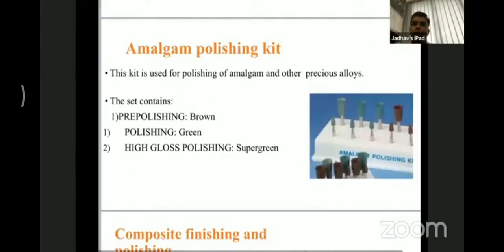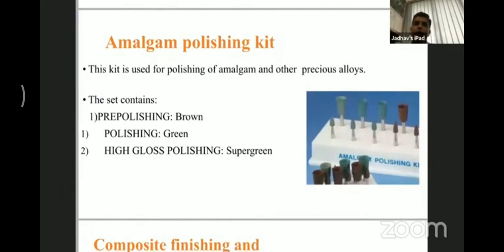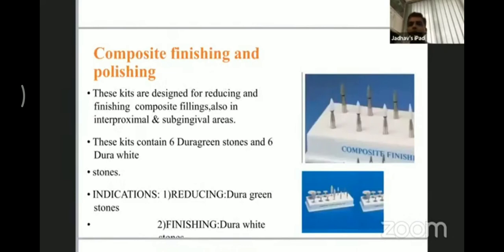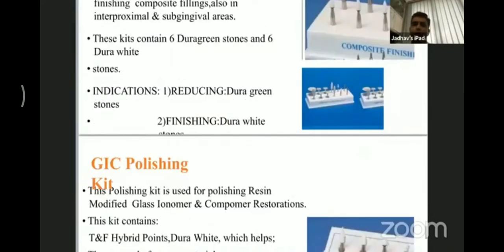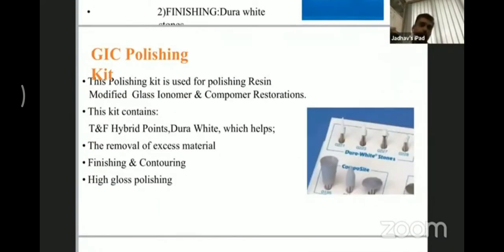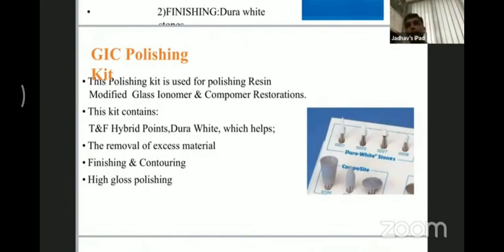For amalgam finishing, there is a kit available in brown, green, and super green. For composites, green and white are used in sequence, containing different shapes and sizes, and gross finishing can also be done with the white. For glass ionomer, a commonly asked question is: when is finishing and polishing done? Gross finishing of glass ionomer is done at the end of restoration using a sharp instrument or blade, while final finishing and polishing should be done after 24 hours. Finishing kits are also available for high gloss and a uniform surface.